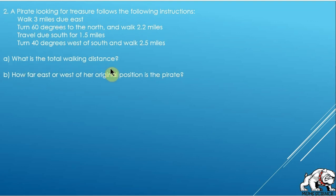What's the total walking distance? Well, the total walking distance is just like a pedometer, and so you just take three miles plus 2.2 miles plus 1.5 plus 2.5 and you should get that she ended up walking a total of 9.2 miles.